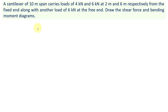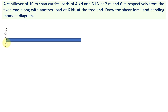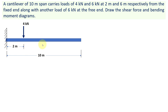First, let us construct the configuration diagram — a cantilever beam of 10 meter span. A point load of 4 kilonewtons is acting at a distance of 2 meters from the fixed end. Another point load of 6 kilonewtons is acting at 6 meters from the fixed end. And we have another point load of 6 kilonewtons located at the free end of the cantilever beam.